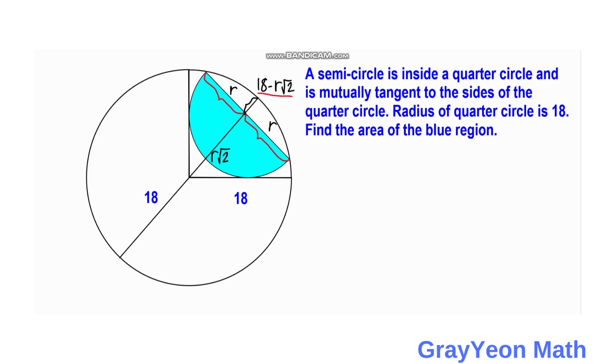And for the value of this segment here, this is just simply 18 plus this value R square root of 2. So 18 plus R square root of 2.